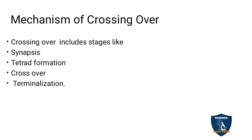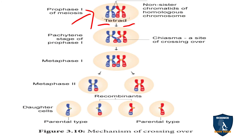The mechanism of crossing over includes the following stages: synapsis, tetrad formation, crossover, and terminalization. First, we will see the diagram. Synapsis means the pairing of homologous chromosomes. In this diagram, one homologous chromosome pairs with another. This pairing of homologous chromosomes is called synapsis, and it takes place in the zygotene stage of prophase 1 of meiosis 1.